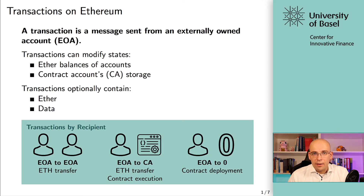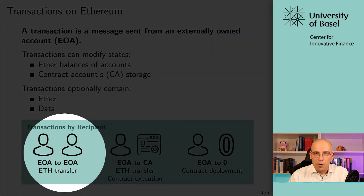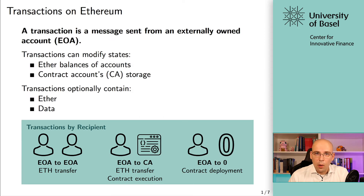Transactions can be exclusively initiated by an EOA — externally owned accounts controlled by a private key. We have three different kinds of transactions. Number one, that's what we've done last time with account one and account two — the simplest form: EOA to EOA. The only thing you can do with EOA to EOA is transfer some value. You're saying: I have this Ether, I want to transfer it to this new account.